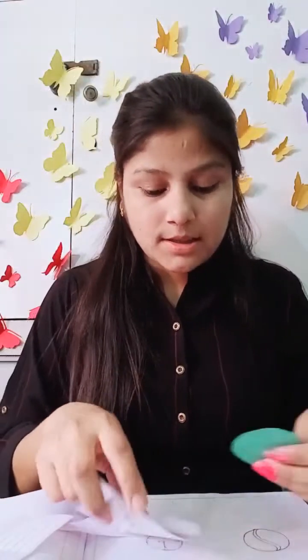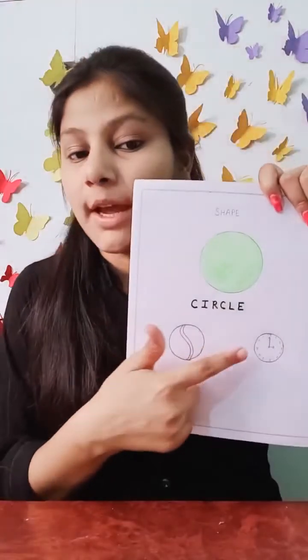Your work is: you have to make any two objects related to circle in your notebook. Now our second topic is the concept of big and small. Big means bada, small means chota. You have lots of toys at home which are big and small.